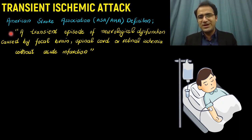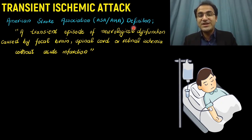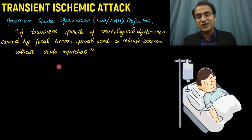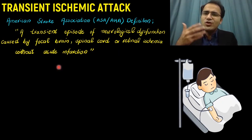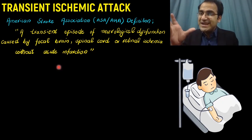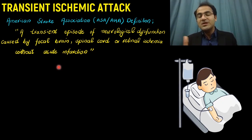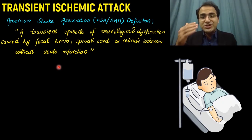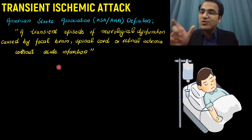What is transient ischemic attack? The American Stroke Association and American Heart Association define transient ischemic attack as a transient episode of neurological dysfunction caused by focal brain, spinal cord, or retinal ischemia without acute infarction. This means the patient presented to you in the emergency department with a neurological complaint, and when you did CT and MRI, there was no finding, and after some time the patient completely recovered.